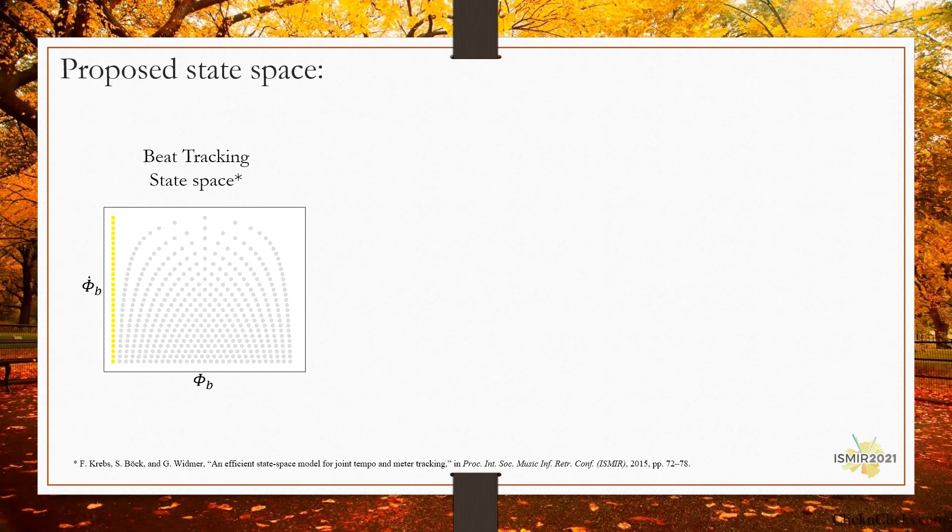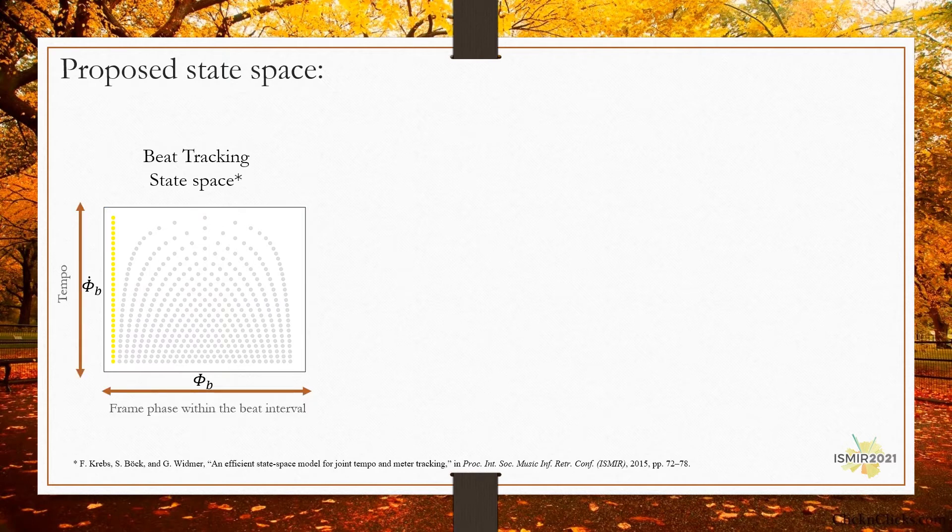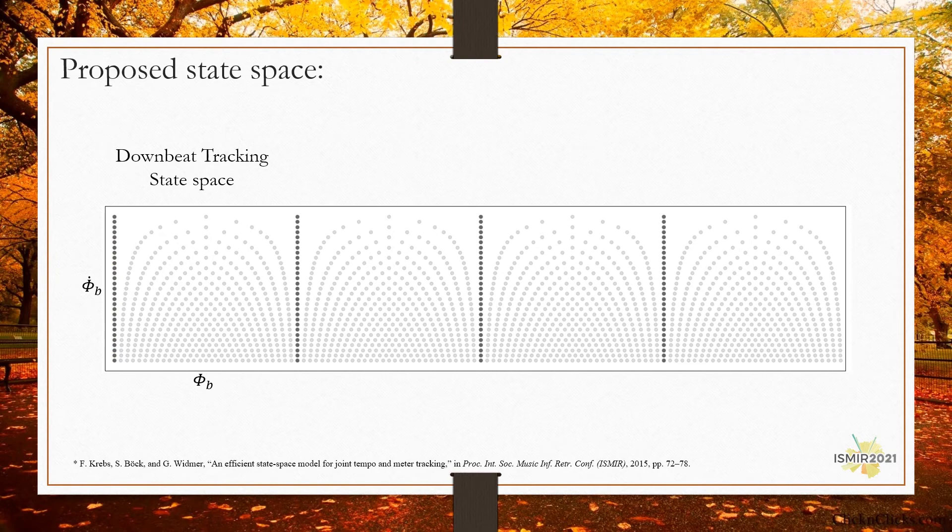For the beat tracking, the Krebs state-space model is utilized. It comprises two axes, one denoting the frame phase within the beat interval and the other representing the tempo. However, we didn't follow their fashion for downbeat tracking and didn't concatenate several beat state-spaces to form a bar state-space. The reason is that such a model increases the number of states drastically as demonstrated in the figure. Also, for each time signature, a different state-space is required.